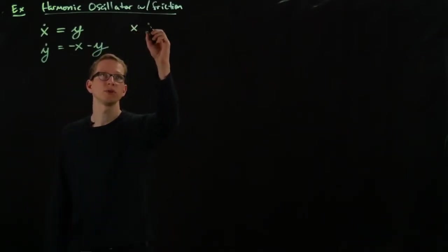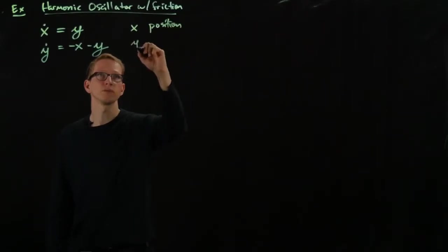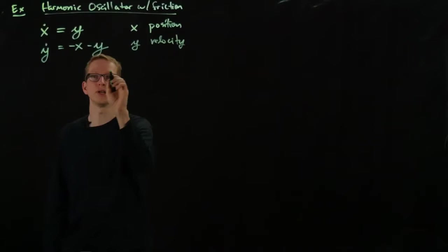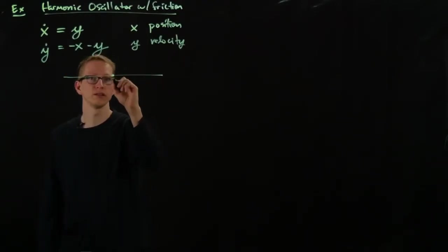And x is supposed to be interpreted as the position. And you can think of y as being the velocity. And this is a harmonic oscillator in one dimension. So you have some point here. Let's say this is the origin, x equals 0. And you have a spring.